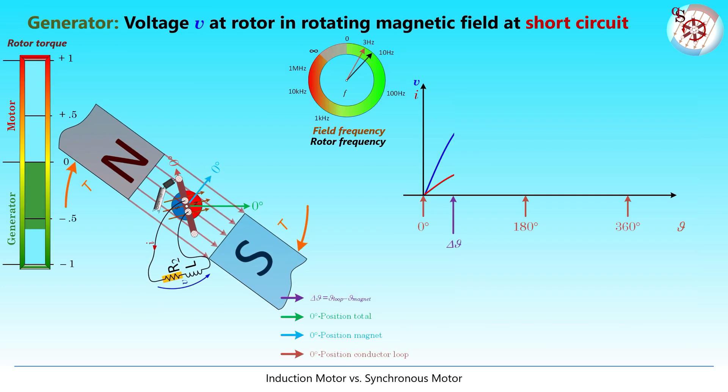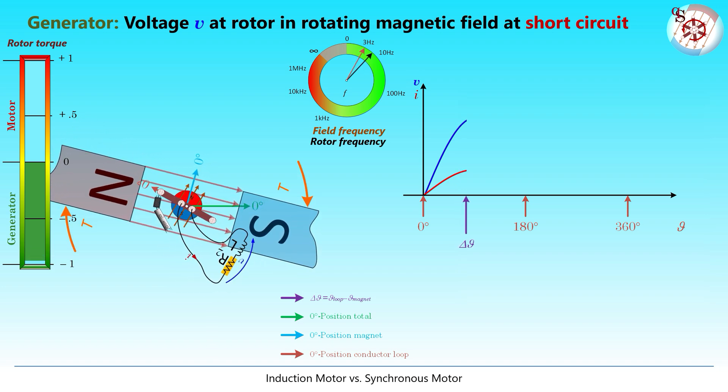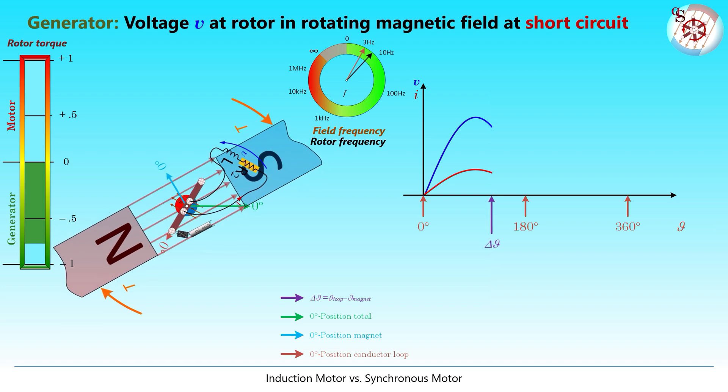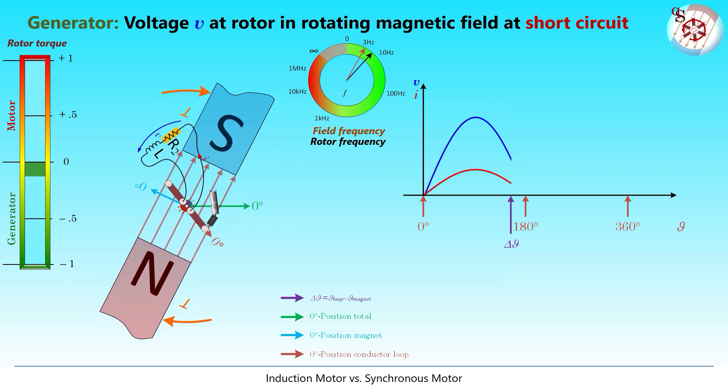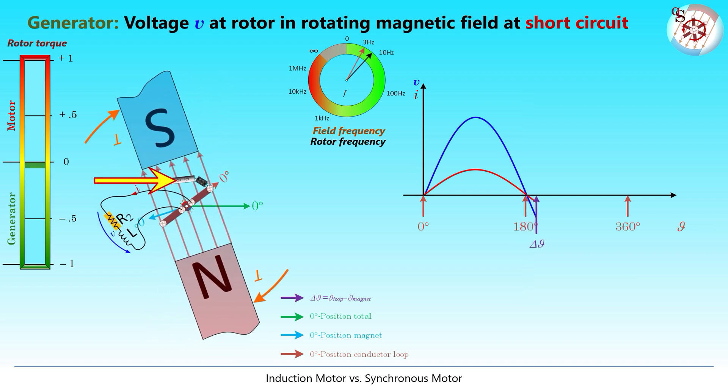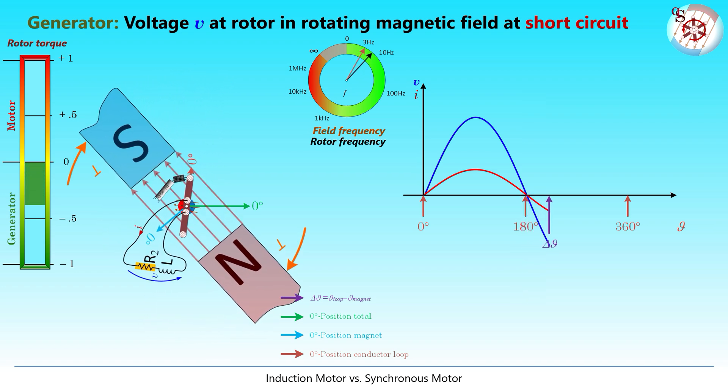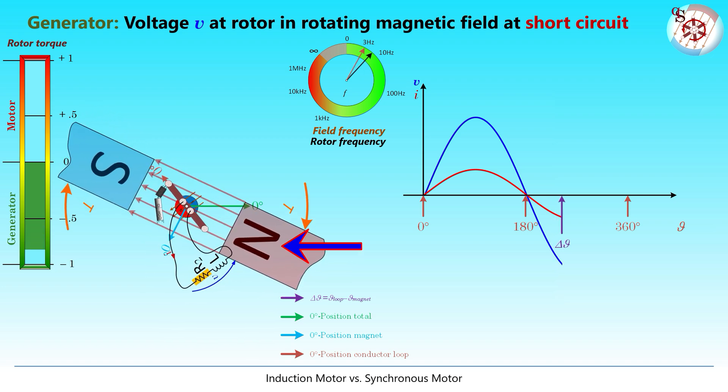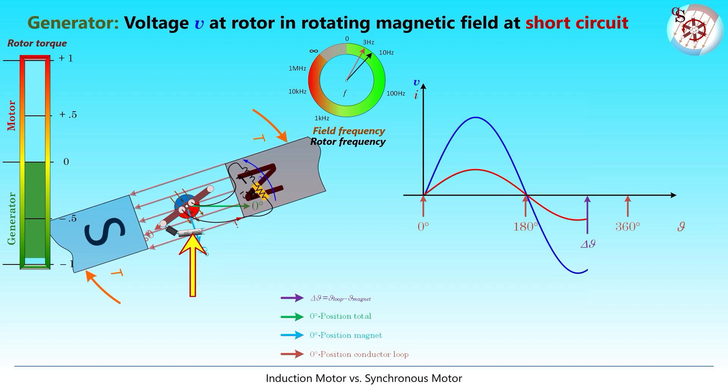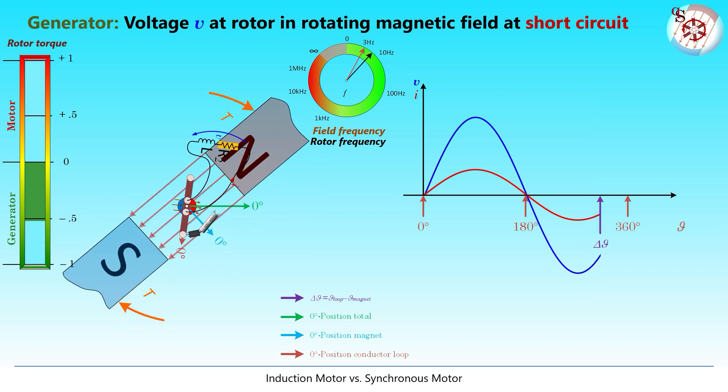Now we start rotating that short circuit loop in an already turning magnetic field. We towed that loop faster than the rotating field. This is done by this tiny locomotive. The slower magnetic field tries to slow down the rotor, hence withdrawing mechanical power from the locomotive. This is generator operation.